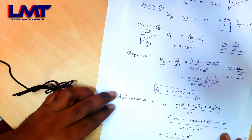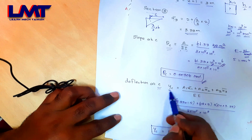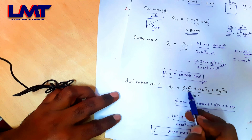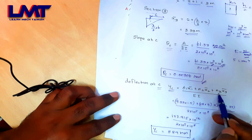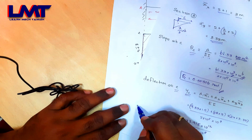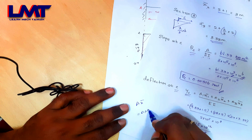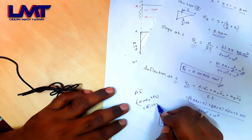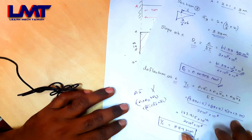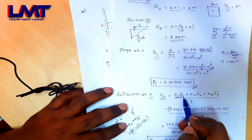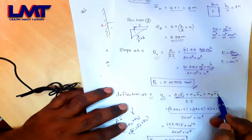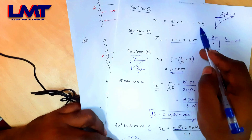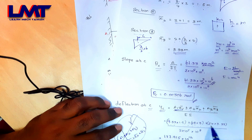For deflection, the formula is: deflection = (A1×X1-bar + A2×X2-bar + A3×X3-bar) / (E×I). Substituting: A1 = 9.33, X1-bar = 1.5; A2 = 28, X2-bar = 1; A3 = 24, X3-bar = 3.33. These are summed and divided by EI to find the maximum deflection at the free end.